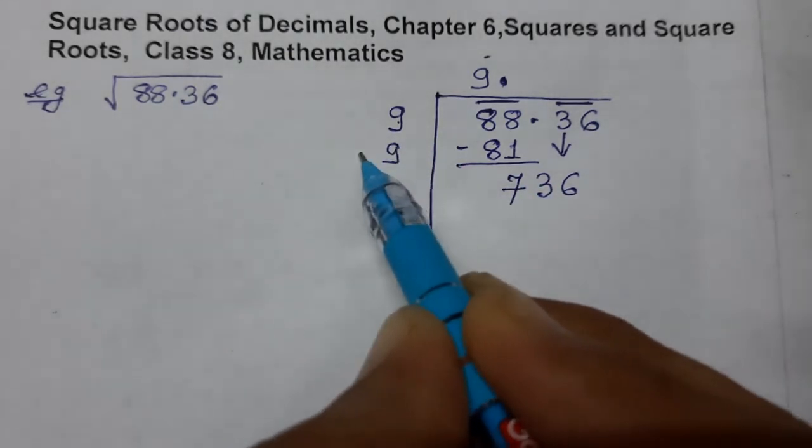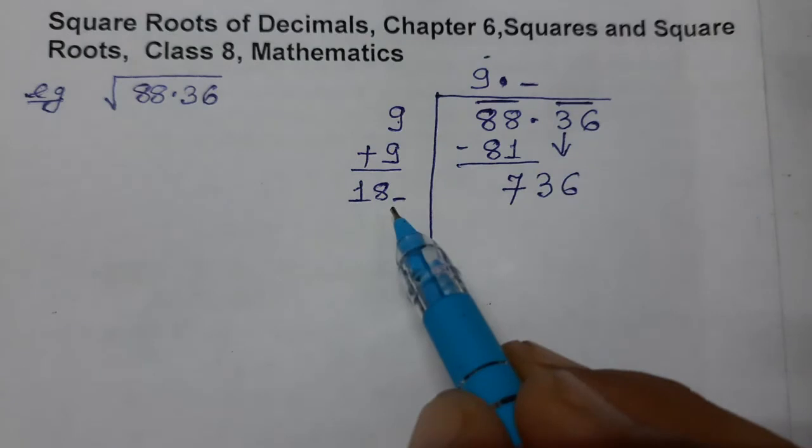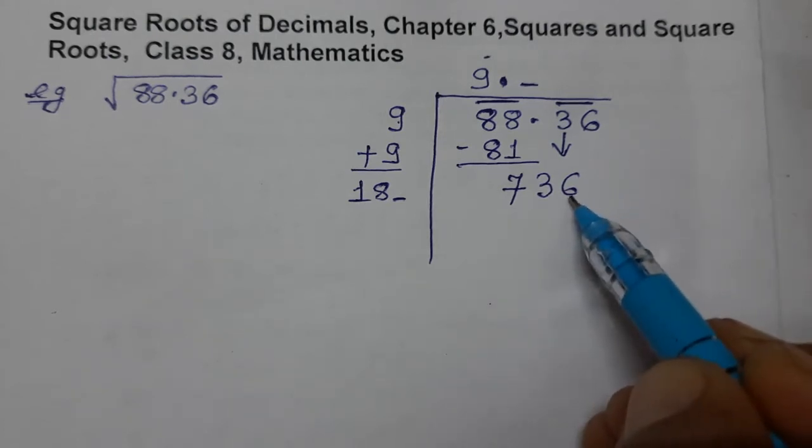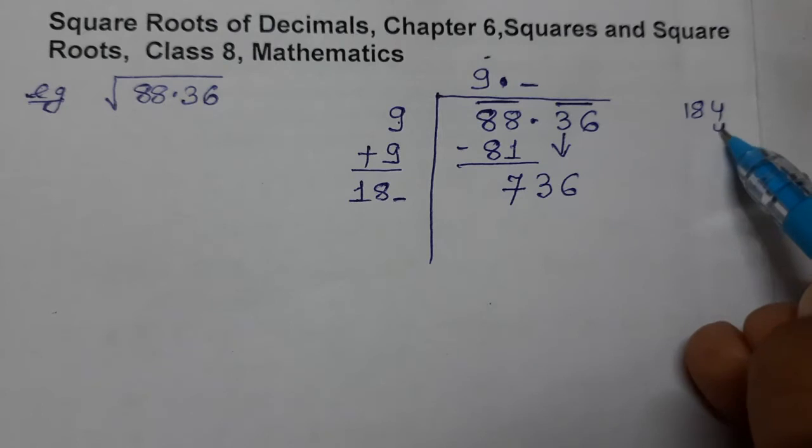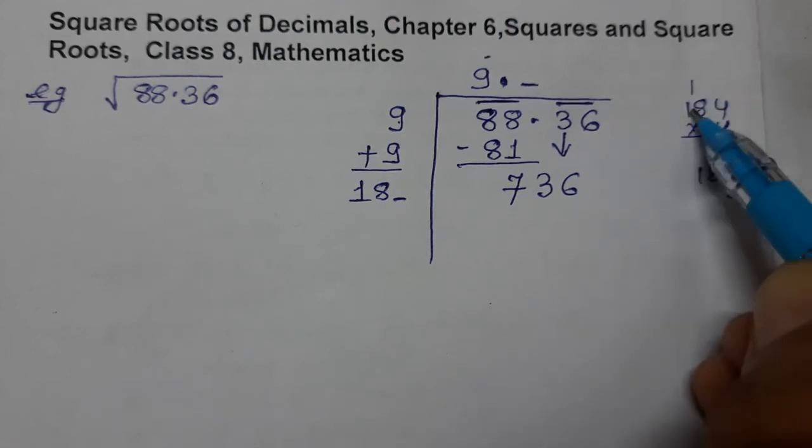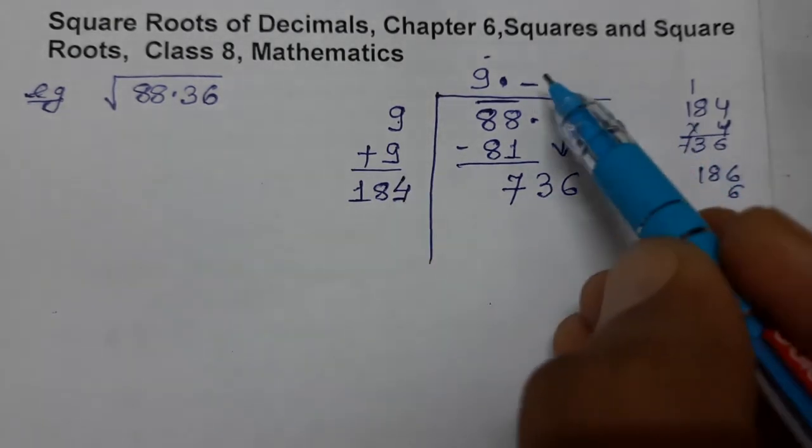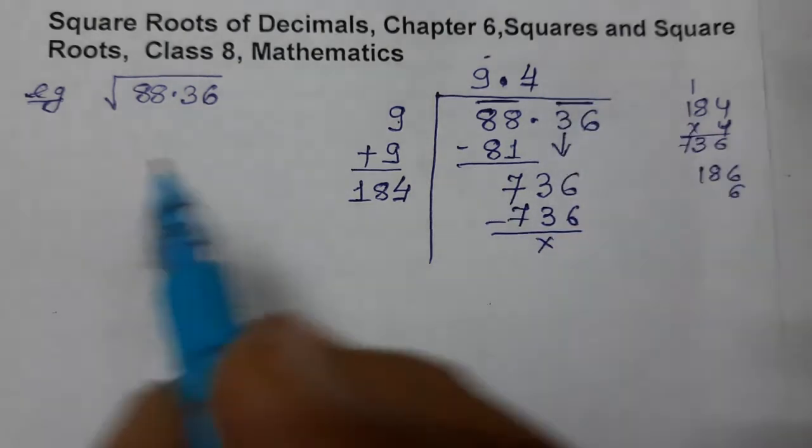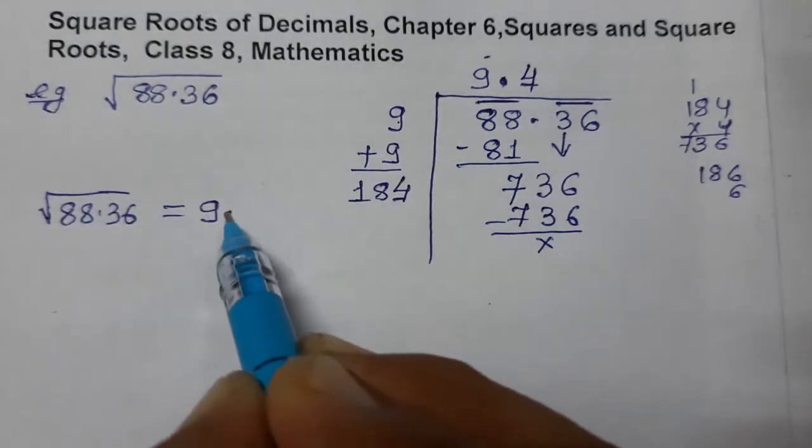Then next step is also the same. Again, 9 plus 9 is 18, and you have to put one blank here and one blank here. Now you have to search the number. We need to search: 184×4 is 736, or 186×6. What answer? 4×4 is 16. So 184×4, so 736. So the square root of 88.36 comes to 9.4.